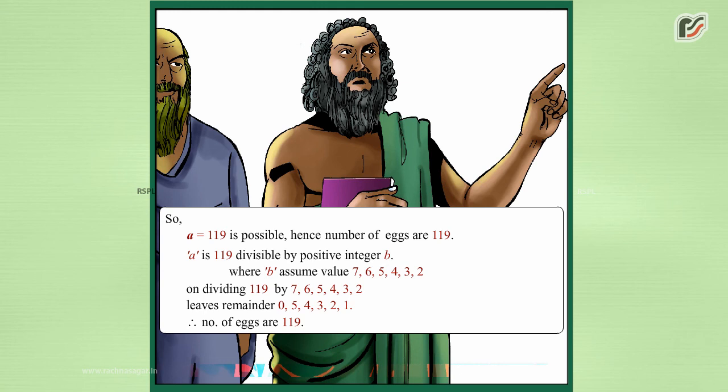Hence, the number of eggs is 119. Verifying: 119 divided by 7, 6, 5, 4, 3, and 2 leaves remainders 0, 5, 4, 3, 2, and 1 respectively. Therefore, the number of eggs is 119.